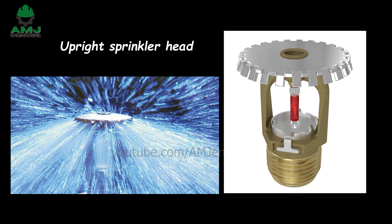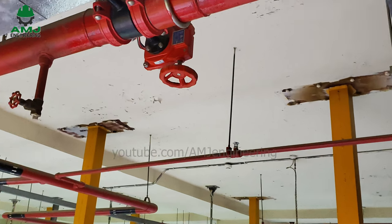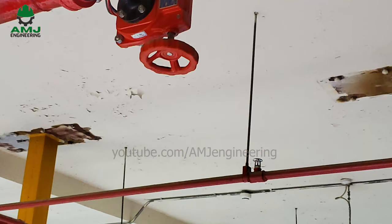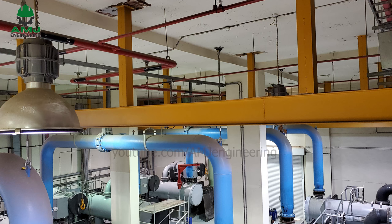Upright sprinkler head. Upright fire sprinklers spray water upward to a concave deflector, like an umbrella, producing a dome-shaped spray pattern. Rather than descending through the ceiling, these sprinkler heads are usually mounted on pipes just below the ceiling. Upright sprinkler heads are efficient at dispersing water between obstructions, and are frequently used for rooms that are inaccessible, such as mechanical rooms, warehouses, and industrial spaces. They are also often applied in structures with open ceilings.